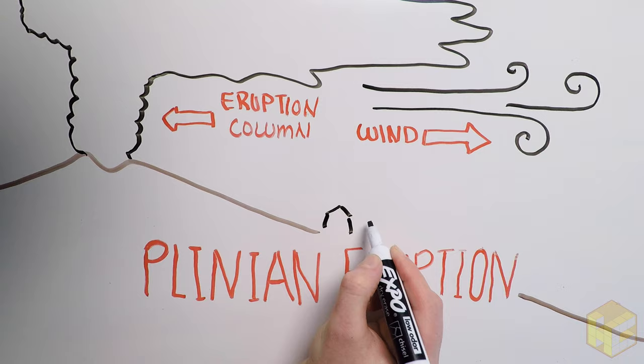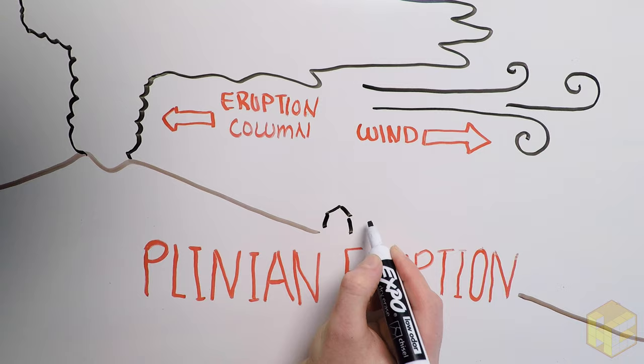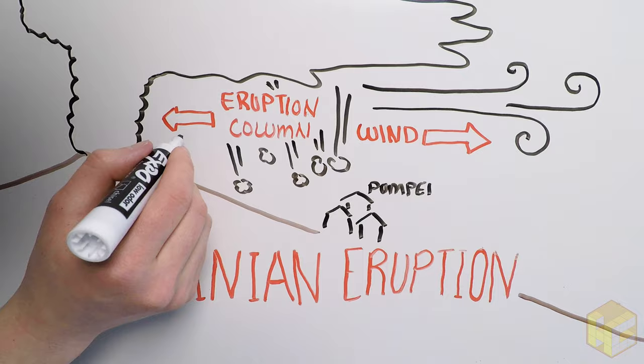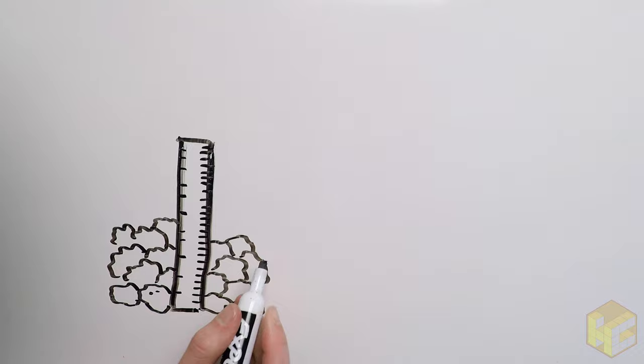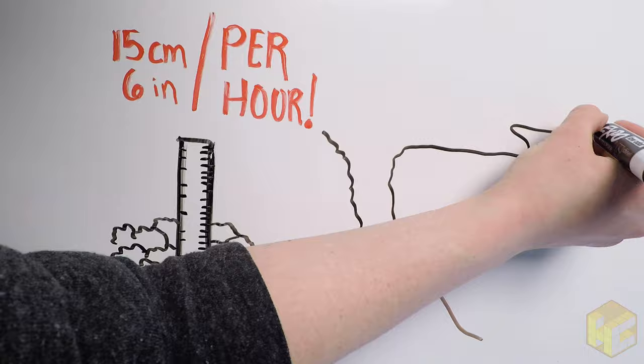Scientists have compared Pliny's accounts to the geological record to piece together the timeline of events of that fateful eruption. The wind pushed the falling pumice southeast of the volcano. Pumice started falling about 30 minutes after the eruption column burst forth and rained down on Pompeii at an estimated 15 centimeters or just under 6 inches per hour. Pumice was pushed by the wind as far away as 72 kilometers or nearly 45 miles southeast of the mountain.